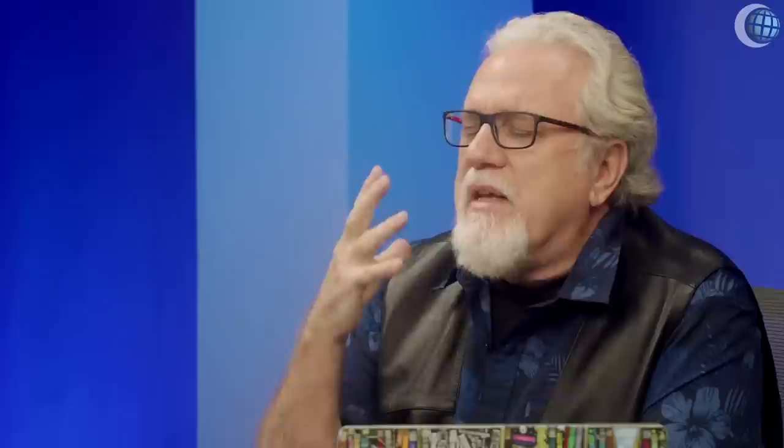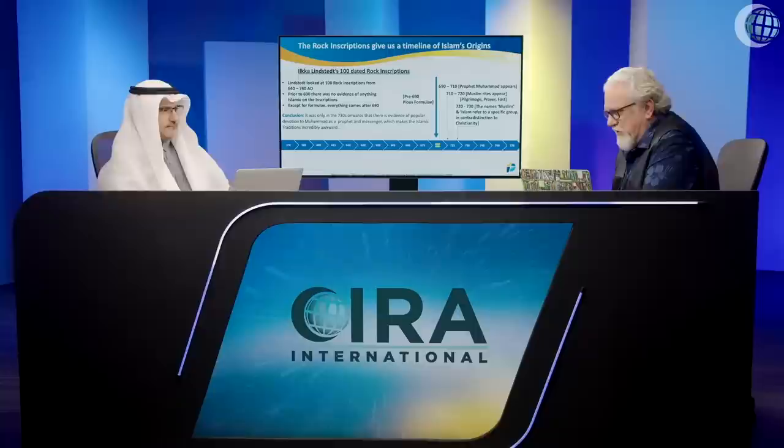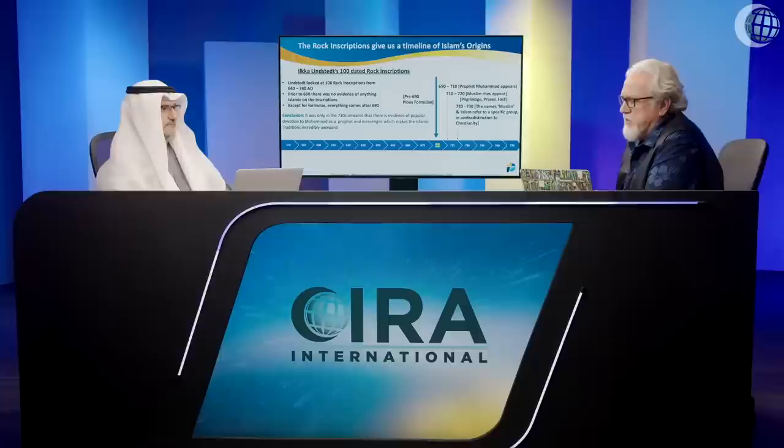It goes against all of this. The standard Islamic narrative says that all of these were introduced by Muhammad himself. He was the first Muslim — the Quran did declare him to be the first Muslim, but it's a contradiction, of course. This idea of Islam, what should have been around when Muhammad was living, does not get introduced till at least a hundred years later. Why can't we find these inscriptions down south, meaning around Mecca and Medina? Nothing. You would expect it to be around there.